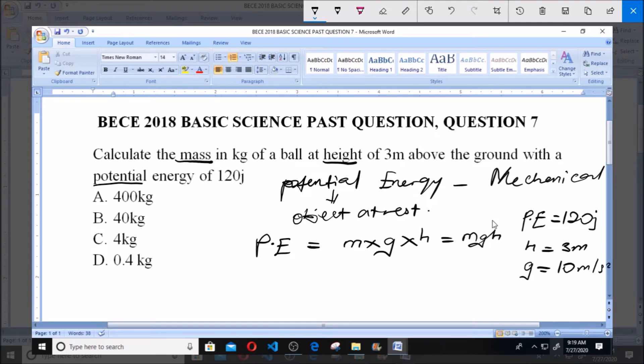So, to find our mass now, we have to make mass the subject of the formula. By making mass the subject of the formula, we have that mass equals the potential energy all over gravity times height.